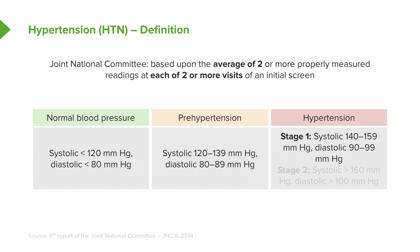Hypertension is staged in two stages. Stage one is considered a systolic blood pressure of 140 to 159, with a diastolic between 90 and 99. Stage two is a systolic greater than 160 and a diastolic greater than or equal to 100.